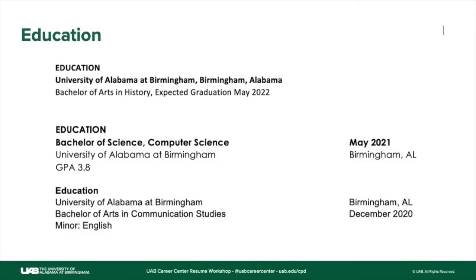You do want to make sure that you're putting your specific degree — whatever your diploma or degree will say, that's what you put on your resume. Even if you're a pre-nursing student, spell out Bachelor of Science in Nursing, or Bachelor of Arts in History. Because you are still currently in school, use something along the lines of 'anticipated' or 'expected.' If you have additional degrees such as community college degrees, list those again in reverse chronological order — start where you are and work your way back.